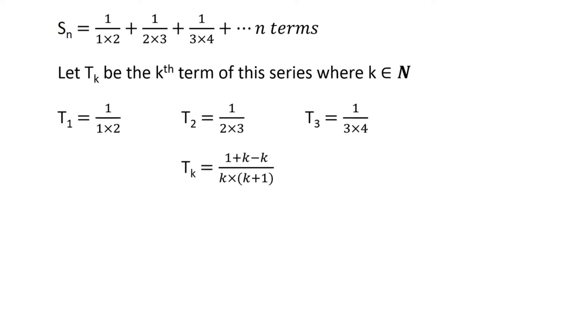Let's add and subtract k from the numerator. Now we can write the kth term as 1 plus k upon k times k plus 1, minus k upon k times k plus 1. On the right-hand side, we can cancel k plus 1 from the first term and k from the second term.